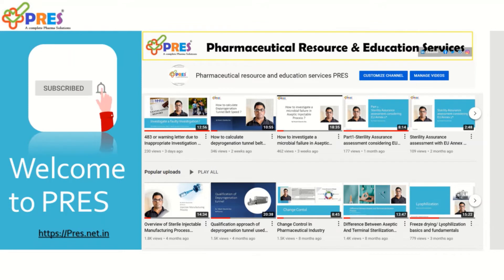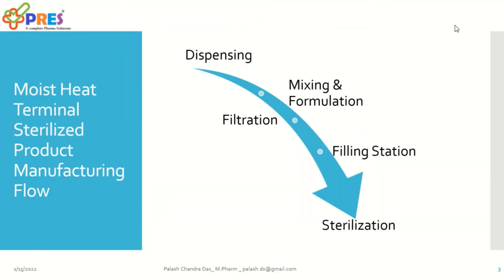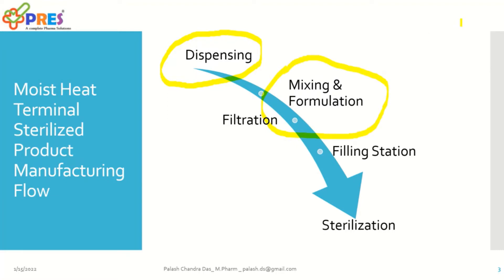This slide demonstrates the most simple steps of manufacturing, starting from dispensing, where you weigh or dispense all the raw materials, excipients, and solvents if required. Once material preparation is ready, you will have a mixing and formulation step where you mix all the dispensed material with solvents and make up the volume as per the batch. Then you will have a filtration process for bioburden reduction.